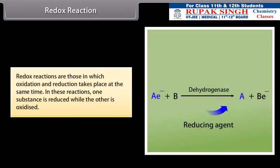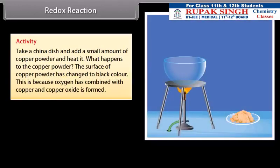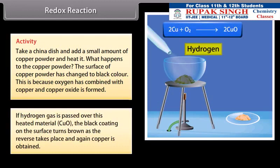Redox reaction: Redox reactions are those in which oxidation and reduction take place at the same time. In these reactions, one substance is reduced while the other is oxidized. Activity: Take a china dish and add a small amount of copper powder and heat it. What happens to copper powder? The surface of copper powder has changed to black color. This is because oxygen has combined with copper and copper oxide is formed. If hydrogen gas is passed over this heated material, CuO, the black coating on the surface turns brown as the reverse takes place and again, copper is obtained.